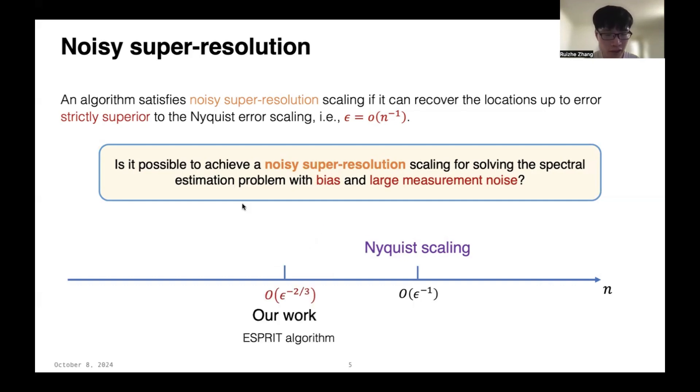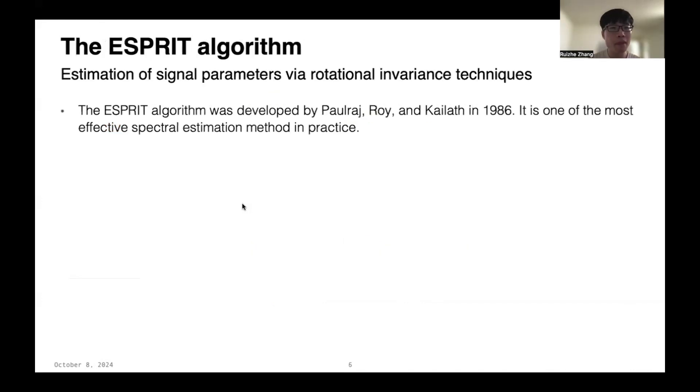And we ask, is it possible to achieve a noisy super-resolution scaling for solving the spectral estimation problem with bias and large measurement noise? The main result of our work is an affirmative answer to this question. We show that the ESPRIT algorithm, an old method for spectral estimation, can actually achieve cut-off frequency scales like ε to the minus 2/3, which is asymptotically better than the Nyquist scaling. Moreover, we prove an information-theoretical lower bound, showing that this error scaling is optimal for all algorithms in this noisy super-resolution regime.